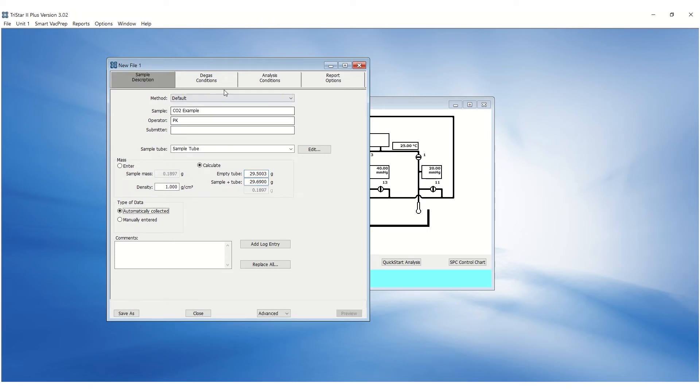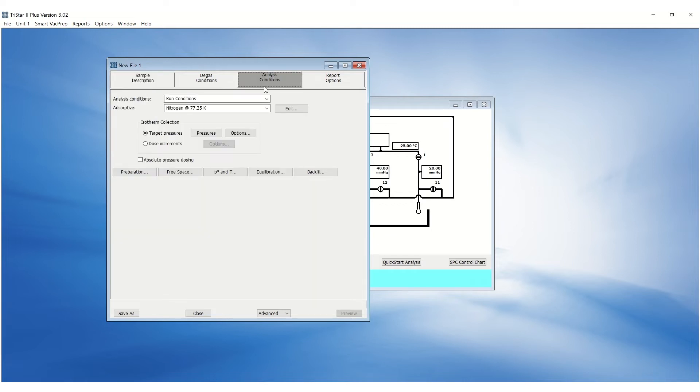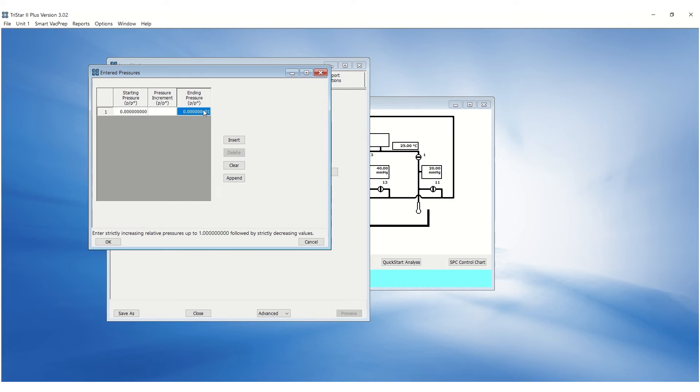Under the analysis conditions tab, choose CO2 at 273.5 Kelvin from the adsorptive drop-down box. Data can be collected by entering pressure points up to 0.03 P over P0 or the atmospheric pressure. Enter a pressure increment to collect a desired number of data points. Here, 0.0075 is entered to collect about 40 adsorption points.